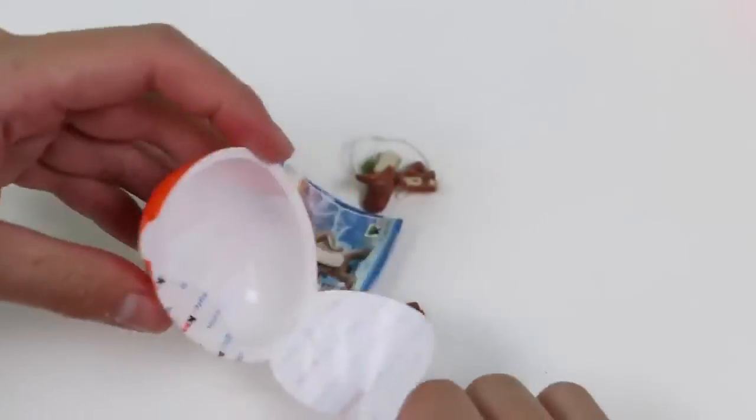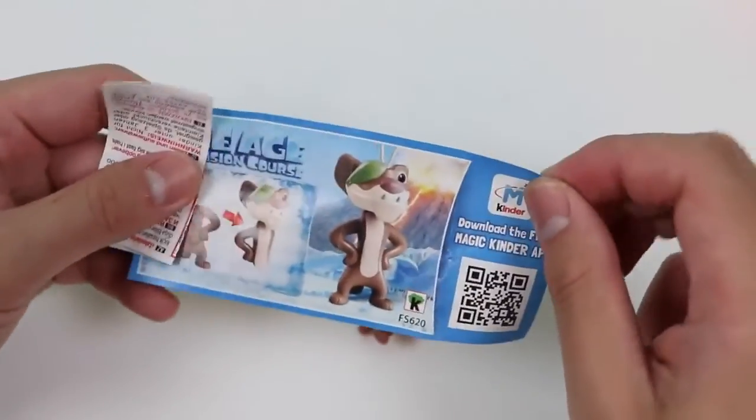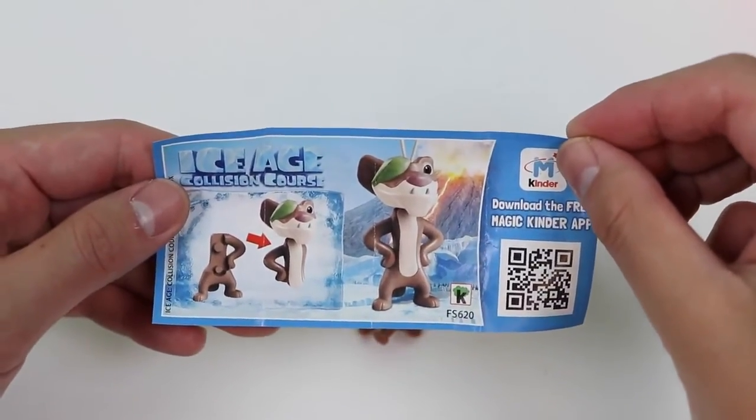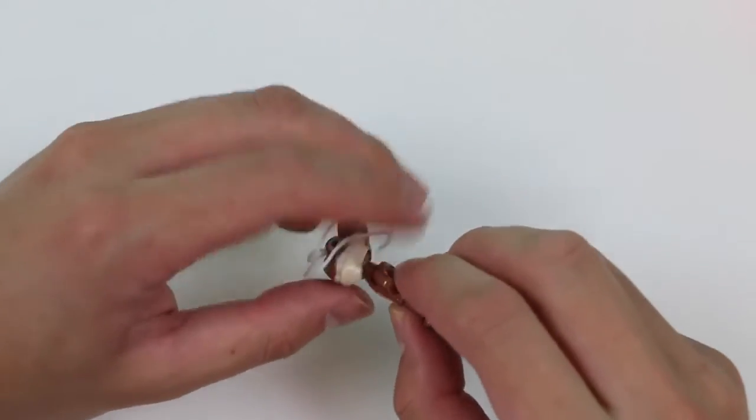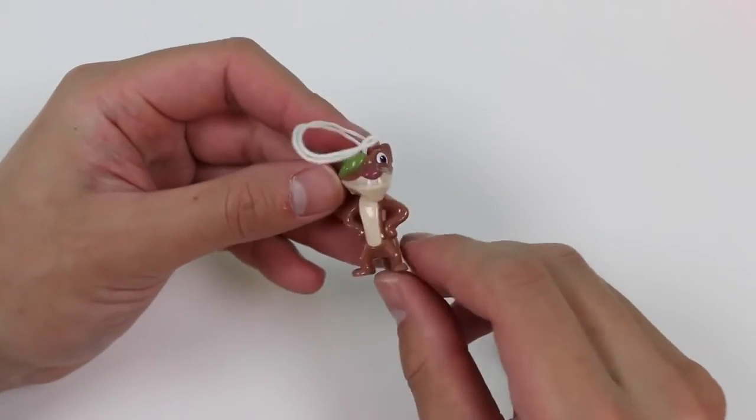I already know! We got an Ice Age Collision Course surprise toy! Let's quickly assemble this character! It's Buck! The One Eyed Weasel!